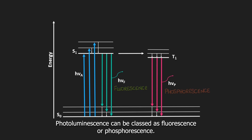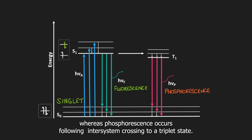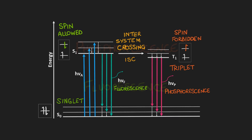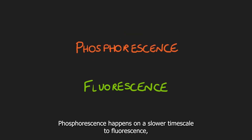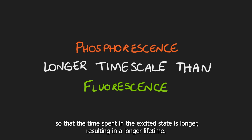Photoluminescence can be classed as fluorescence or phosphorescence. Fluorescence processes come from a singlet excited state, whereas phosphorescence occurs following intersystem crossing to a triplet state. This means that phosphorescence is a spin-forbidden process. Phosphorescence happens on a slower timescale to fluorescence, so that the time spent in the excited state is longer, resulting in a longer lifetime.